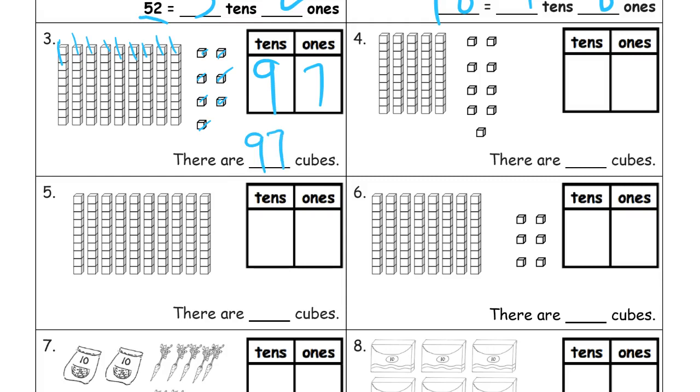And here we're going to count the tens. One, two, three, four, five tens. And one, two, three, four, five, six, seven, eight, nine ones. That's 59 cubes.